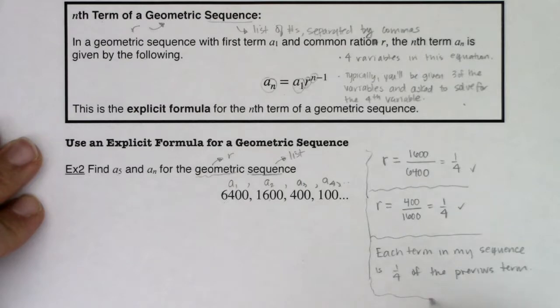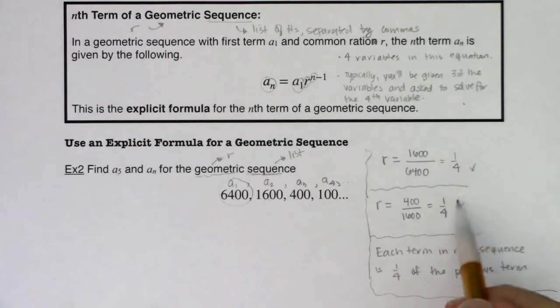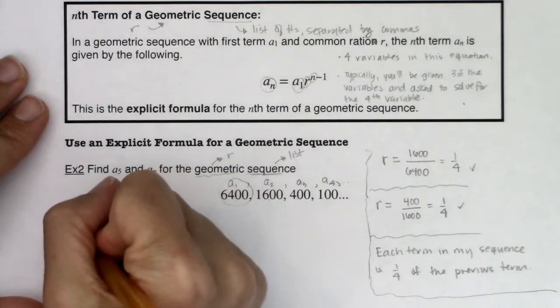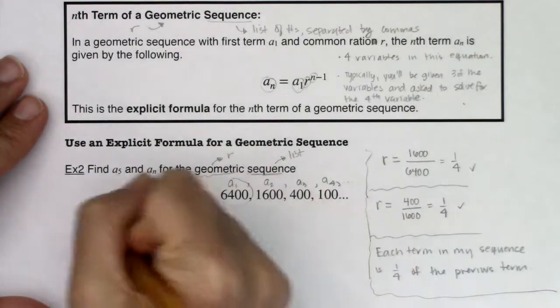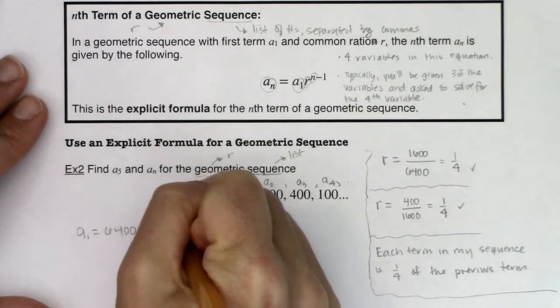So let's just write this off to the side so we can see this. We know each term in my sequence is 1 fourth that of the previous term. There's my little side work. We know our first term, a sub 1, which is super important. We know our ratio, our common ratio.